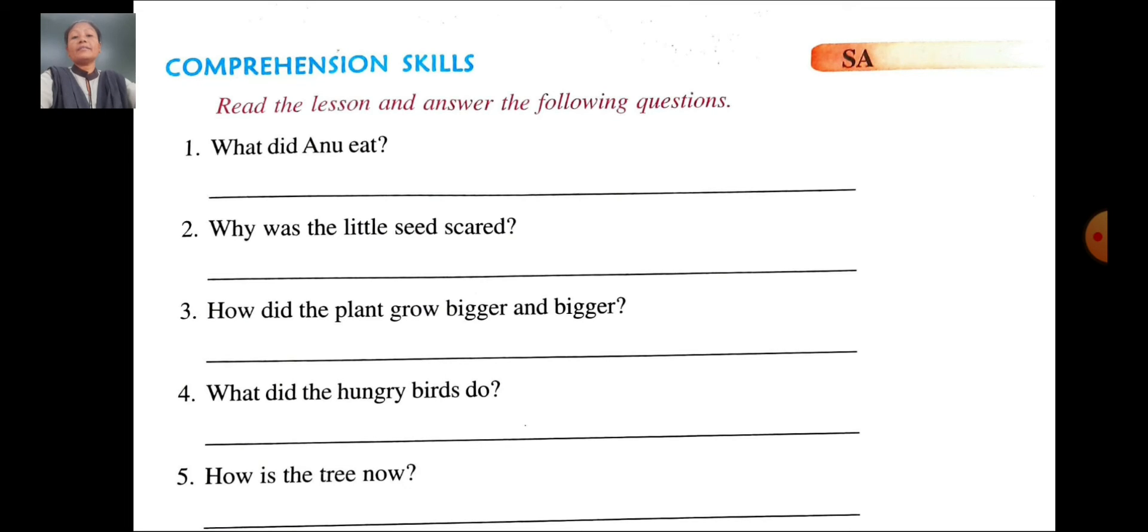How did the plant grow bigger and bigger? Answer, the leaves made fruit and the plant grew bigger and bigger. How did the plant grow bigger and bigger? Answer, the leaves made fruit and the plant grew bigger and bigger. Fourth question,